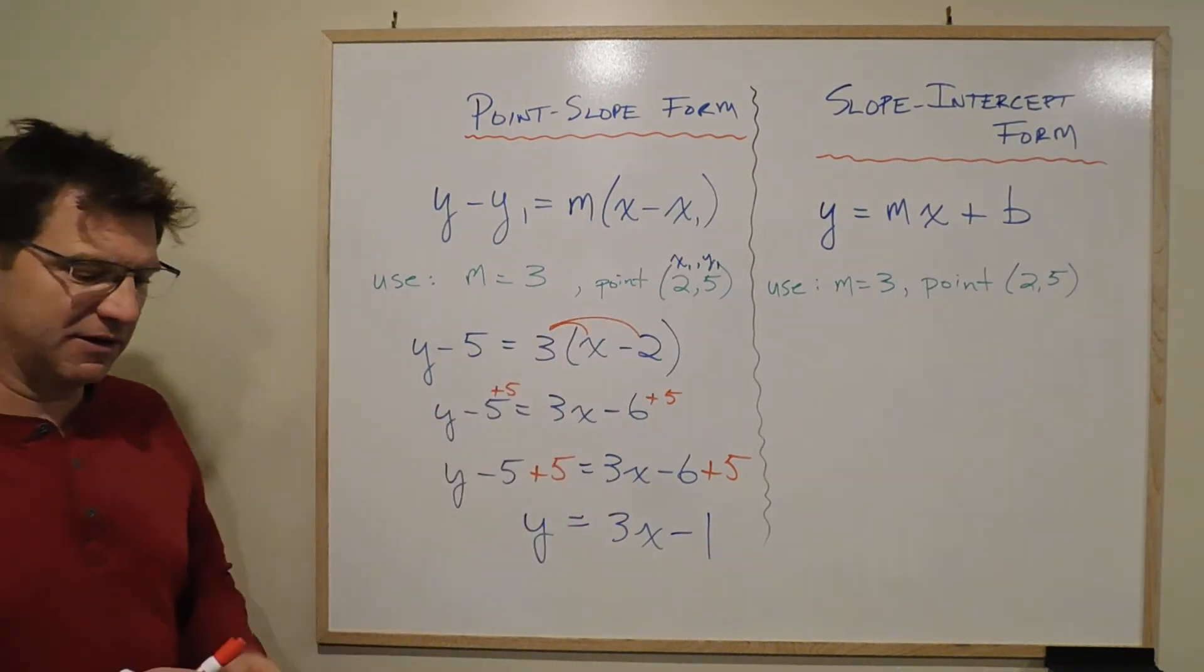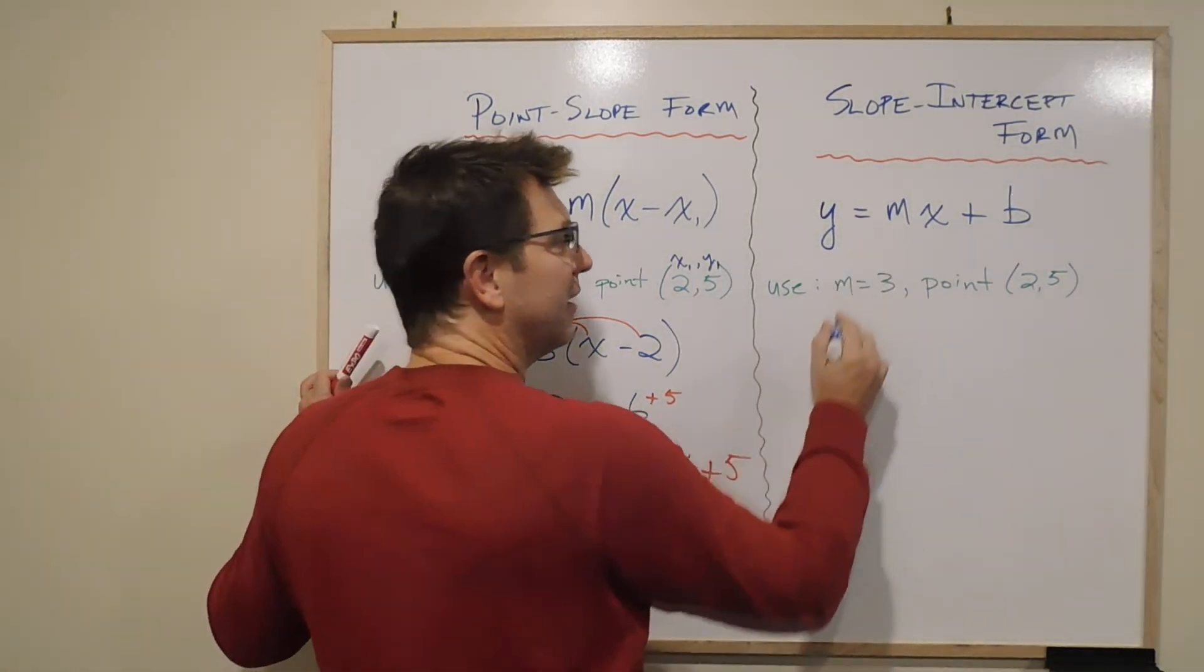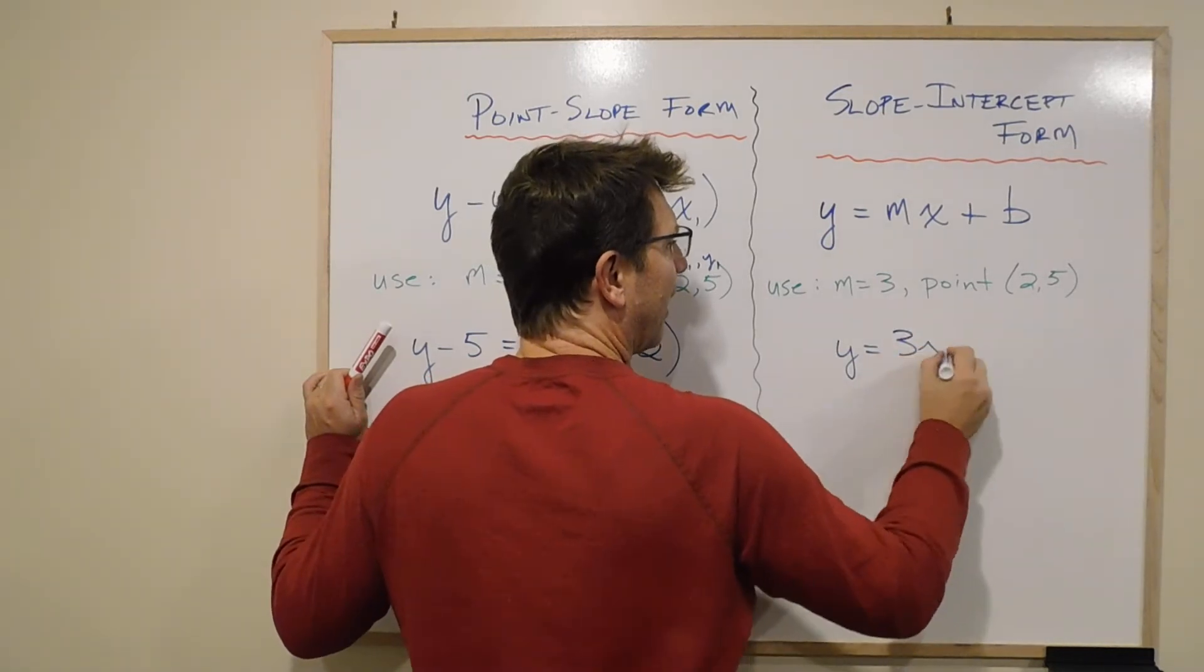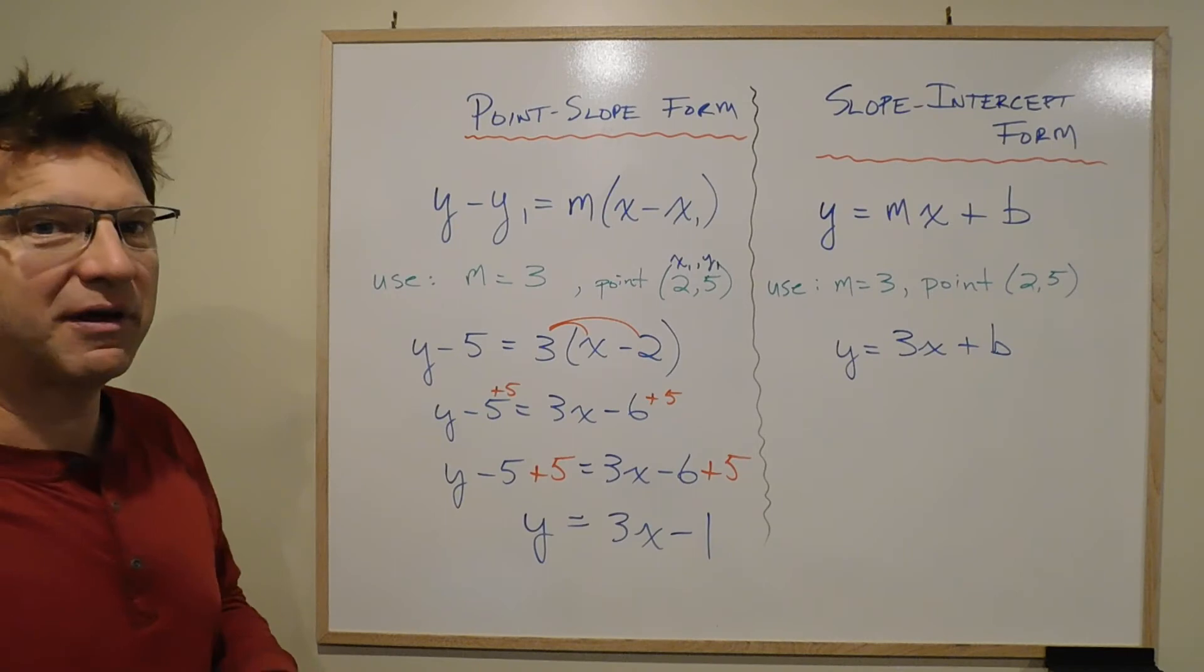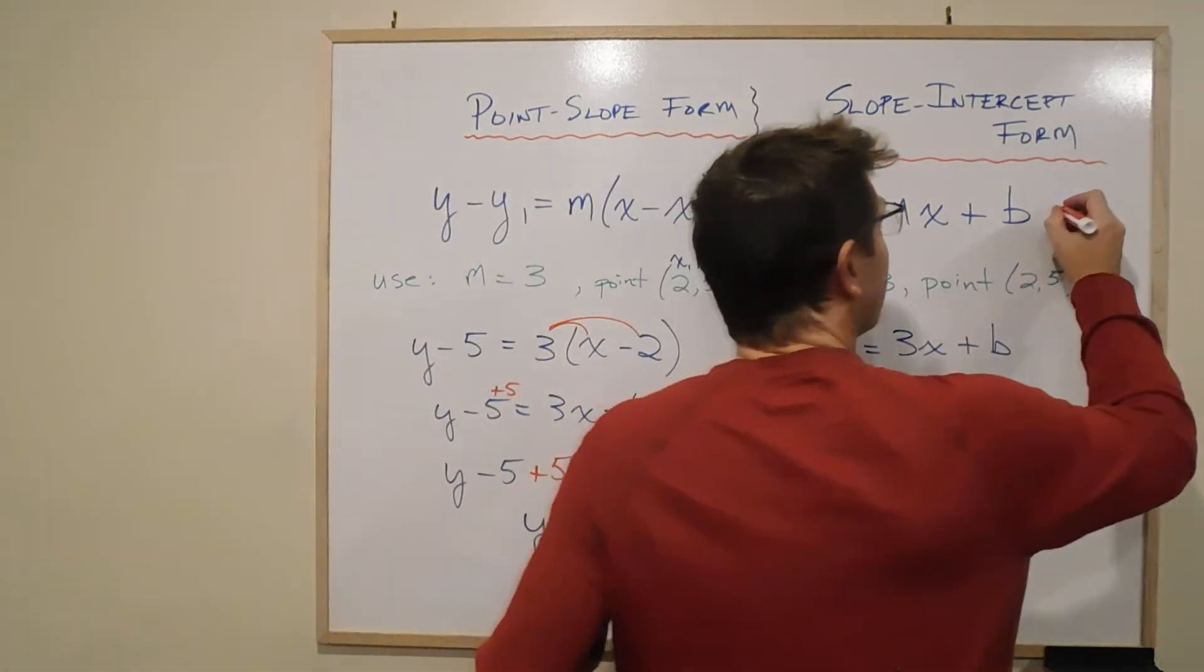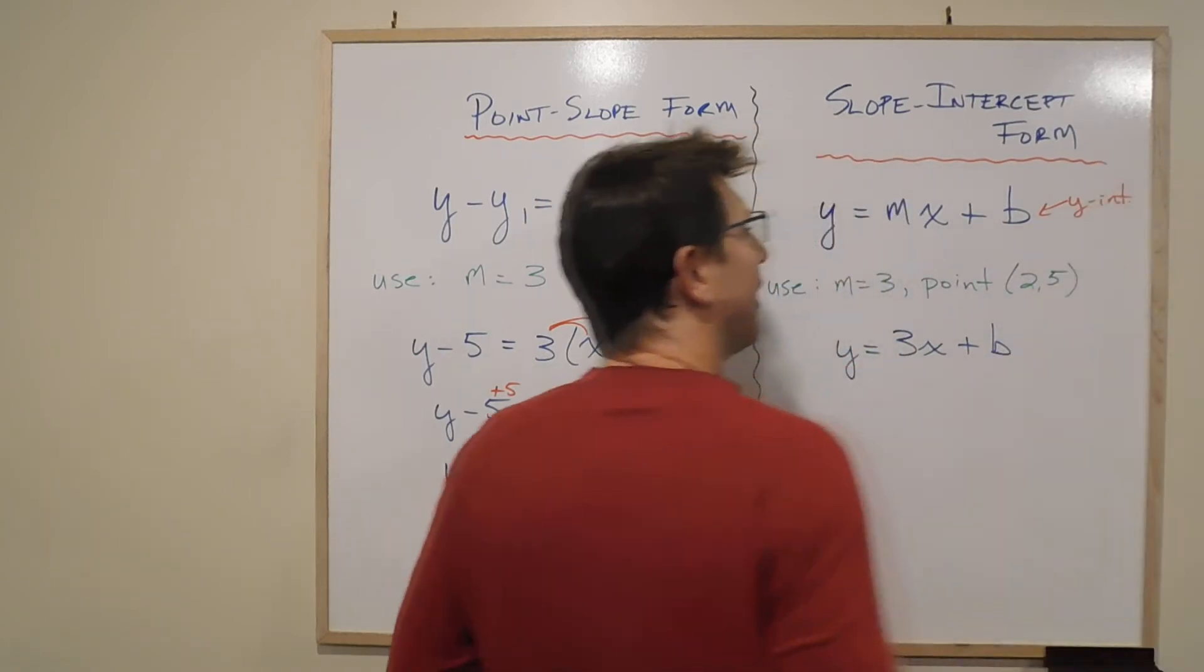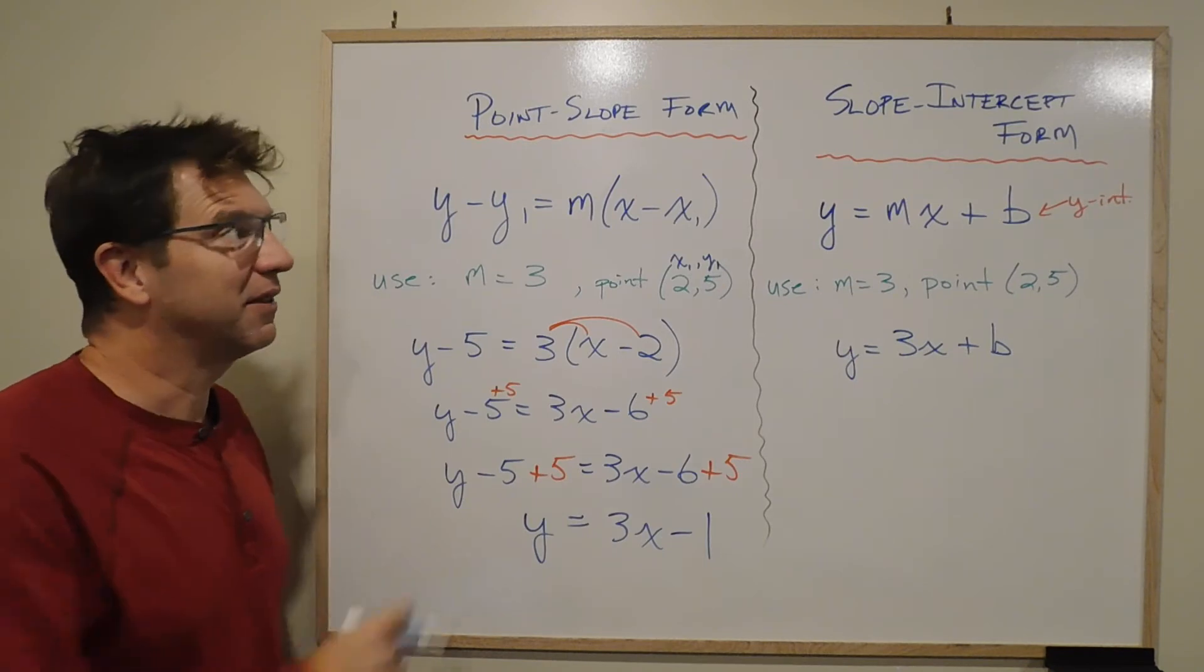Now, the other way that it was done, and the way that's very common, is, well, we know that m is 3. So a lot of people put y equals 3x plus b. Now, b, if you think back to your high school days, b is what we call the y-intercept. But if we don't know the y-intercept, it doesn't really help us with this format.